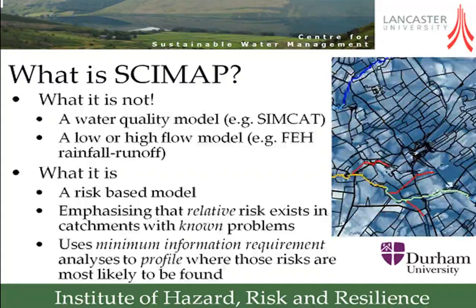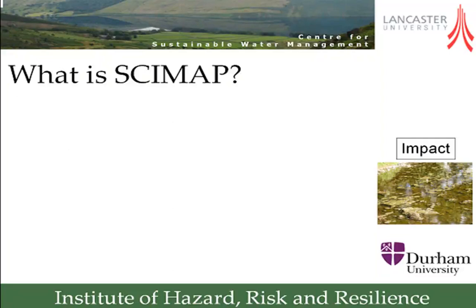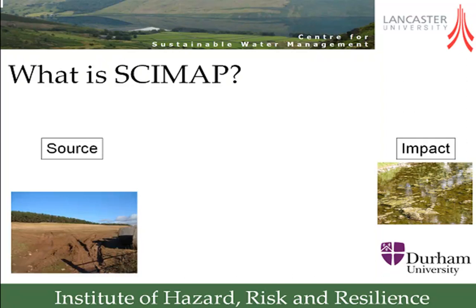Central to Scimap is the idea that most of you — particularly as a regulatory organization — will know where your problems are, either through routine water quality monitoring or because you've got an irate angling club saying the river's a mess. So if you know where your problem is, the challenge becomes finding out what's causing it. Certain parts of the landscape — what Tom Luiz called spatially restricted critical source areas — are more likely to be sources of risk than other parts.